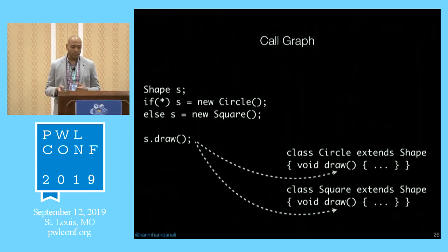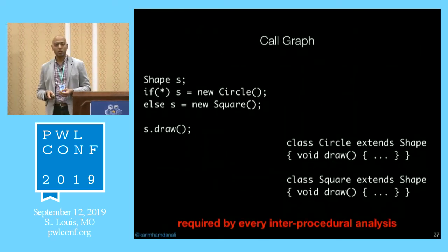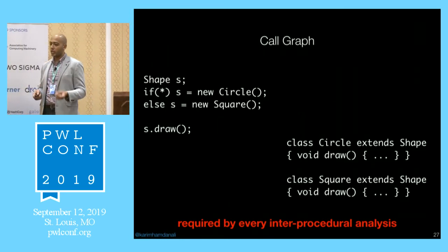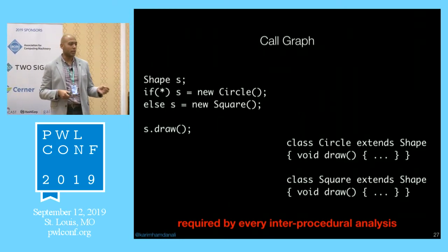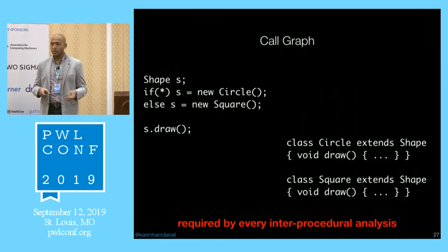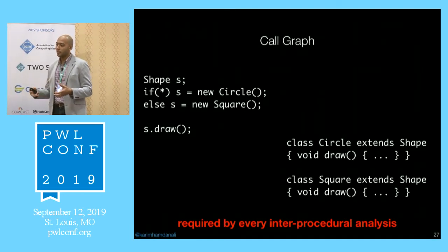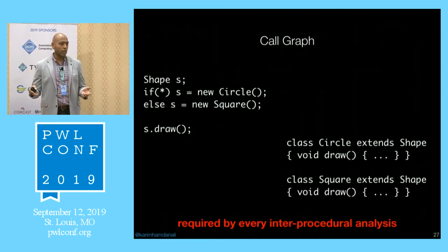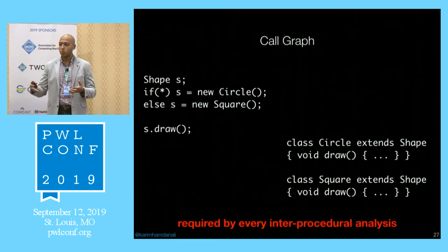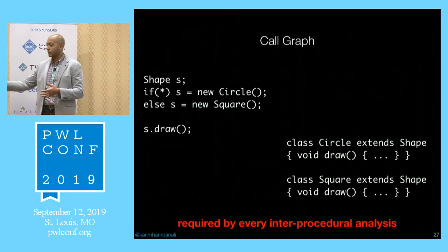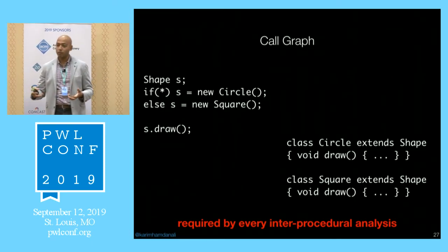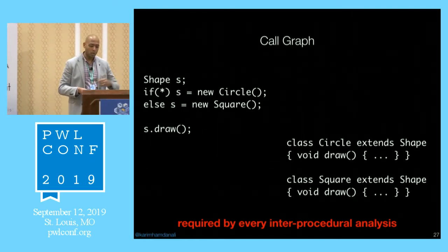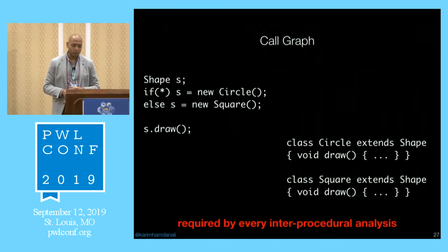A call graph turns out to be a very important data structure because it's required for every single interprocedural analysis — analyses that cross the boundaries of methods in your program. Once you cross a method boundary, you want to know where you're going next if there's a method invocation, and the call graph guides you. It's basically a map of the program.